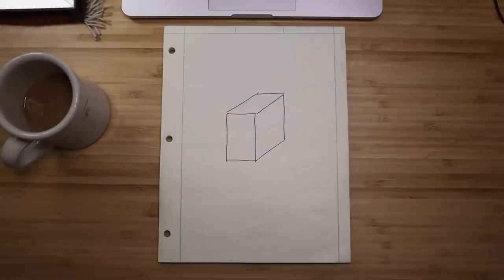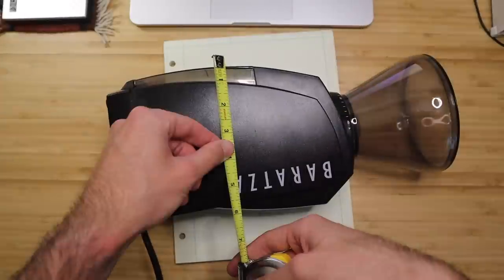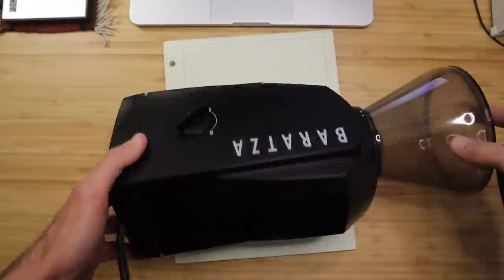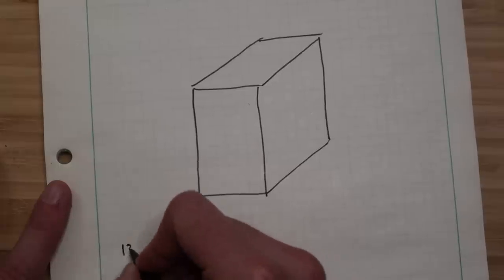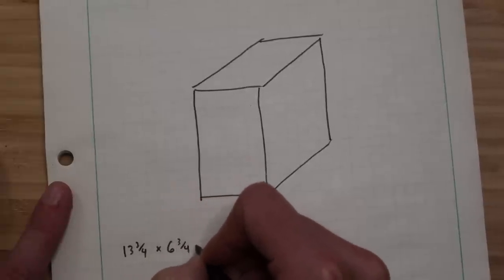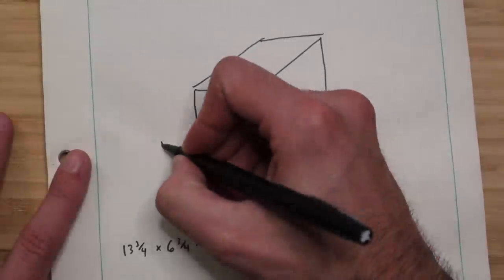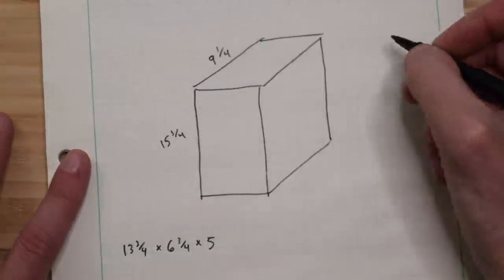This thing is going to have to fit the grinder, which is about 13 and 3 quarter by 6 and 3 quarter by 5 inches. Let's add another inch on either side and on top to allow for some sound deadening foam. And if I'm using 3 quarter inch plywood, this thing will end up about 15 and 3 quarters by 9 and a quarter by 7 and a half.